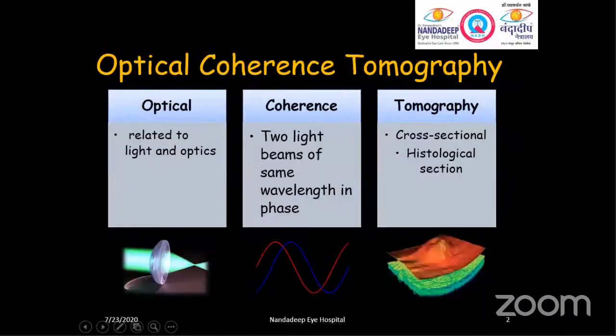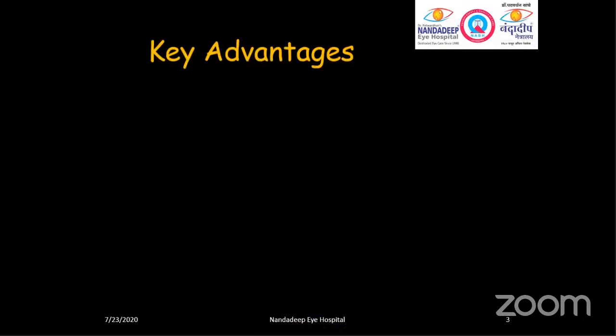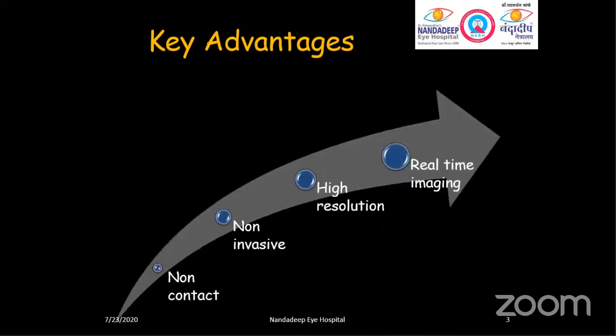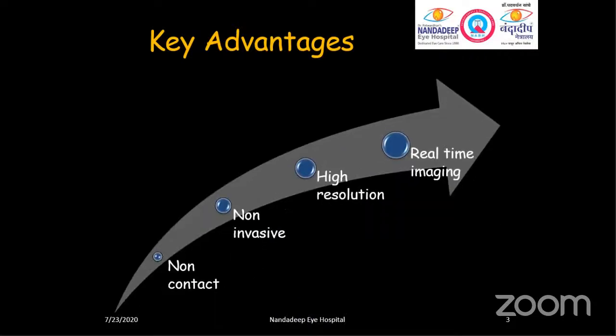OCT not only helps us understand the structural changes in the retina and the optic nerve, but also helps us understand the morphological structures of the anterior segment. Optical Coherence Tomography is an imaging technique that utilizes low-coherence light waves to capture cross-sectional images of the retina. 'Optical' means it is related to the property of light that uses low-coherence interferometry to visualize the histological structures of the retina. OCT is a non-contact, non-invasive procedure that performs cross-sectional high-resolution imaging of biological tissues and measures the time delay and amplitude of backscattered light.